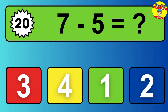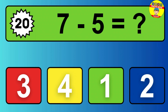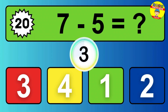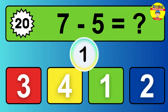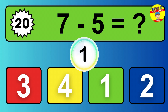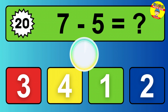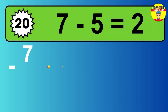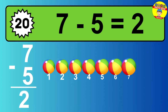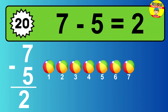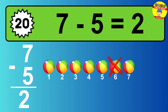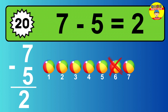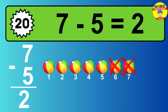Question twenty. Seven minus five equals what? So the answer is, seven minus five is two. Let's count it. One, two.